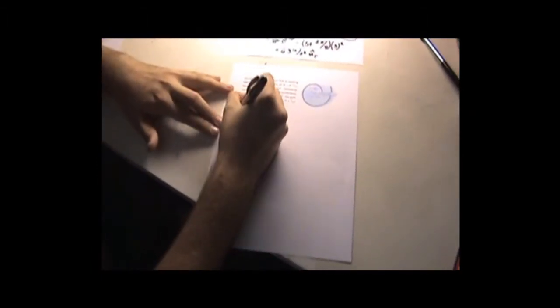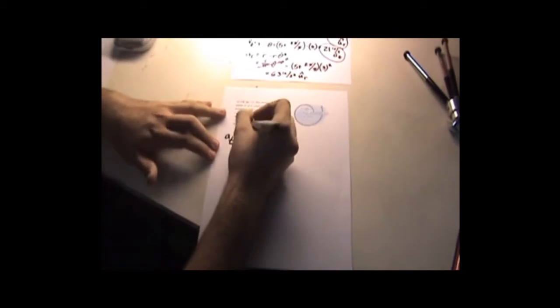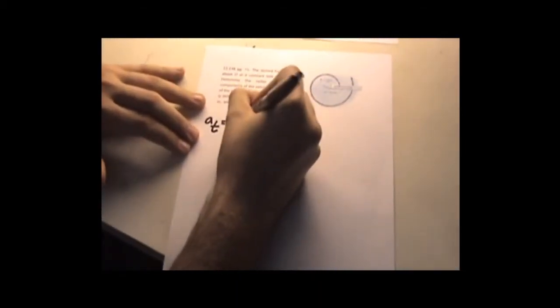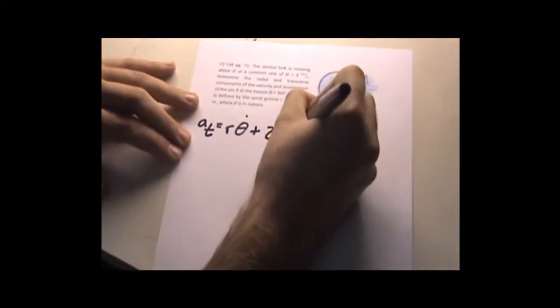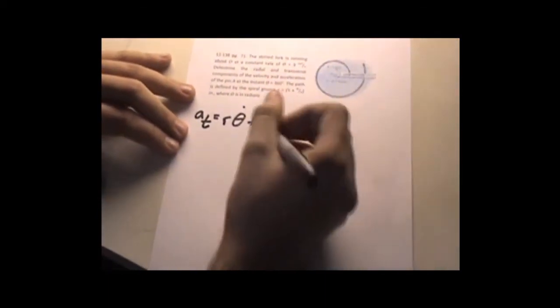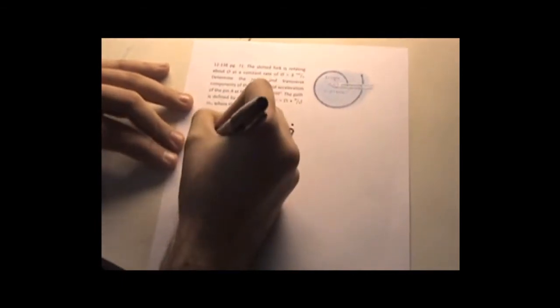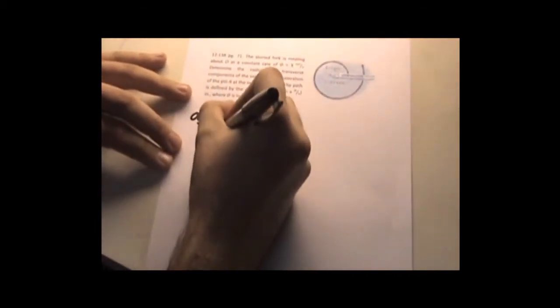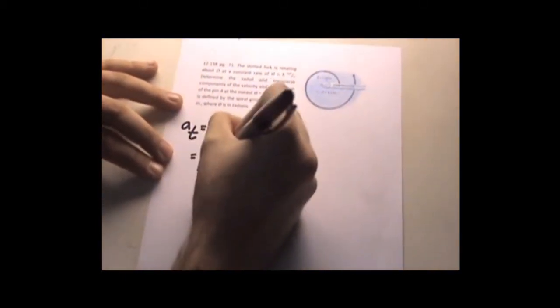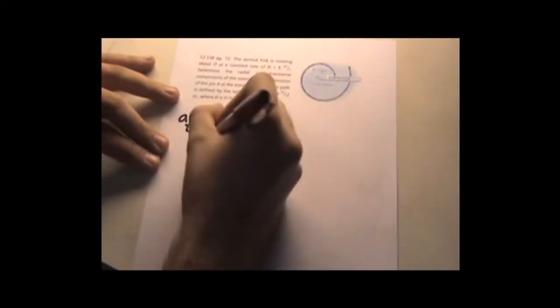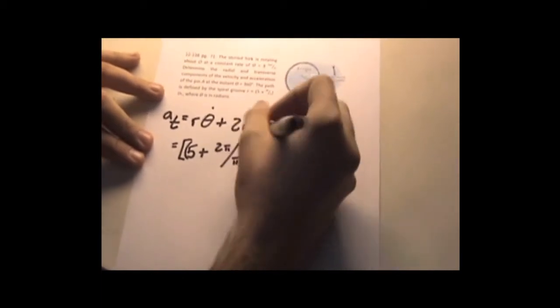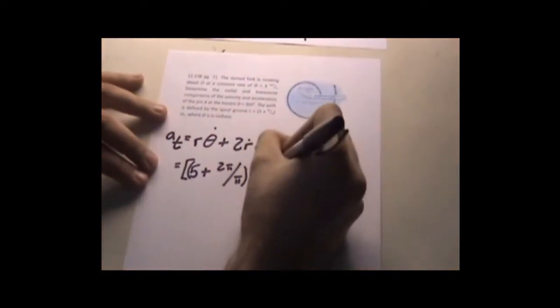Going on to page 2. Tangential acceleration equals rθ̈ plus 2ṙθ̇. Okay. Substitute that in. You get 5 plus 2π, once again, 1 over π. Times θ̇, which is 3 radians per second.